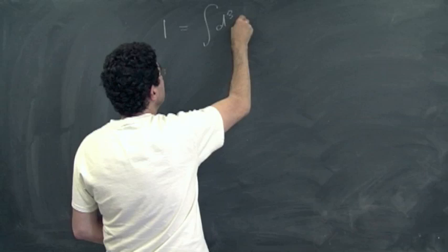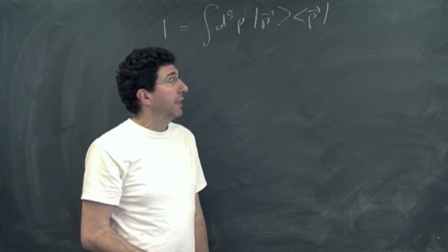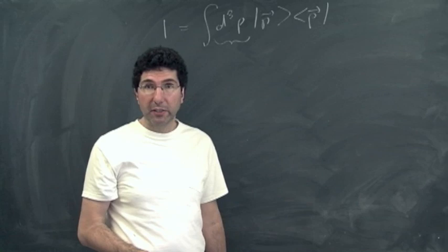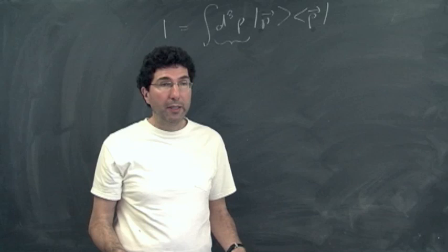Let's look at the completeness relation for the states we're using. This is the standard completeness relation, equivalent to the statement that the overlap is just a delta function. You can see that things are not Lorentz invariant here: integrating over only the spatial parts of P is obviously not a Lorentz invariant thing to do. So what we really want is to integrate over these momenta in a Lorentz invariant way — we want to integrate over all four-momenta P^mu that satisfy P squared equals M squared.